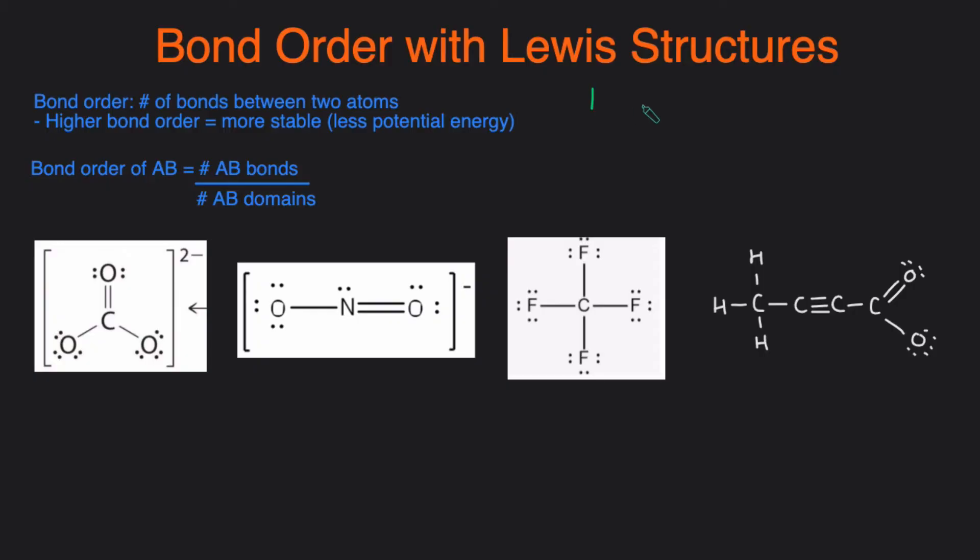For example, if the bond order is one, then that means you have a single bond. If the bond order is two, then it's a double bond. If it's bond order three, then it's a triple bond.